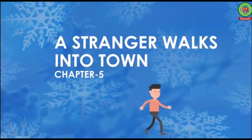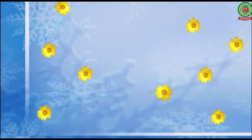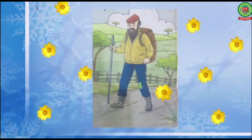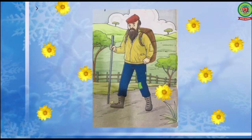Now students, open your book at page number 42, that is chapter number 5, 'A Stranger Walks into Town.' So far we have read that a man was traveling on foot and entered a town of Digne. Citizens stared at him because of his wretched appearance. He was carrying a soldier's knapsack, was wearing a long beard, and was dusty all over.